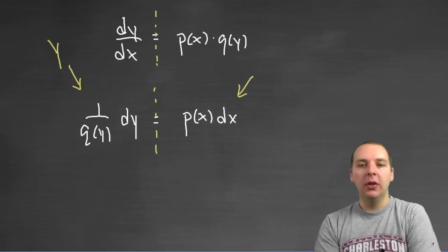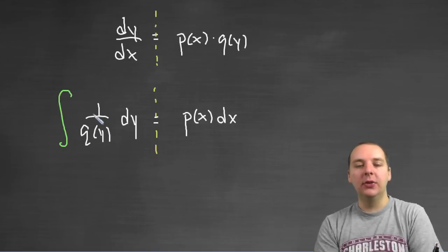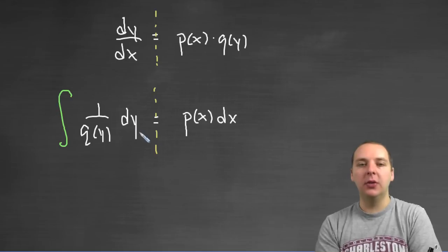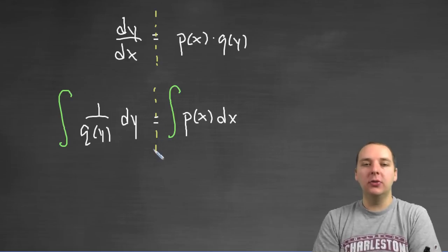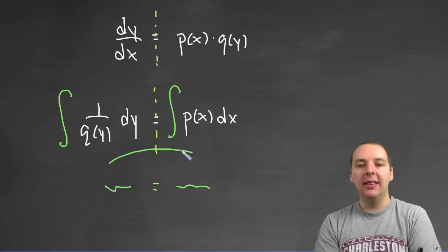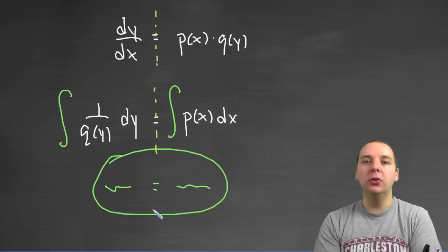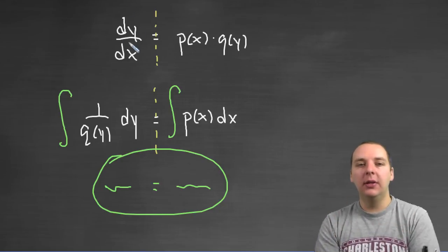Alright now, what do we do at this point? Well you can see this is kind of primed and ready to do some integration. So what we do next is, since you only have Y's on the left, let's integrate this expression with respect to Y, and let's integrate this expression with respect to X. And what happens when you do that is the differentials are removed and you don't have a derivative anymore, you just have one expression equal to another one. And this will wind up being your solution to the differential equation.